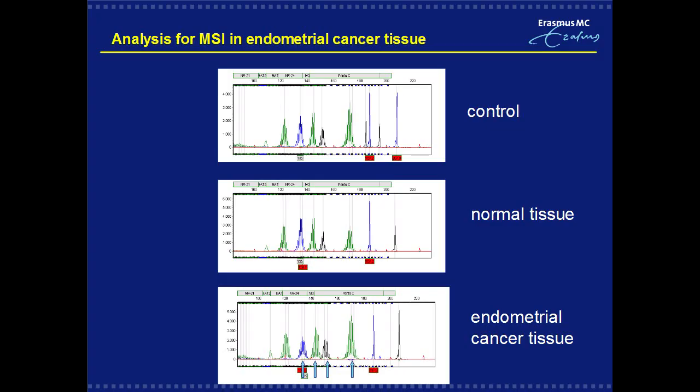In two cases of endometrial cancer, initially no obvious microsatellite instability was detected. Due to a family history of colorectal cancer, germline mutation analysis was performed in one of these patients and revealed an MSH6 mutation. Here you can see the results of the analysis for MSH2 in control tissue, normal and endometrial cancer tissue from this patient. The arrows are pointing at the MSH2. Subsequent MSH2 analysis of corresponding normal tissues showed MSH2 expression in these cases.